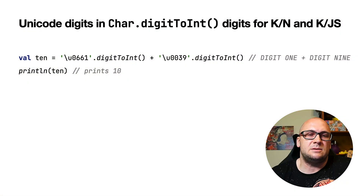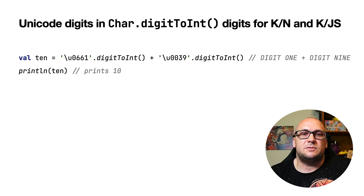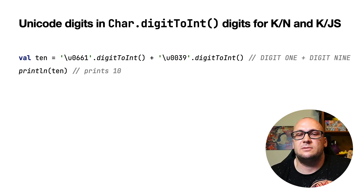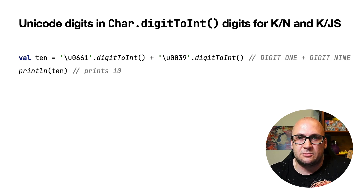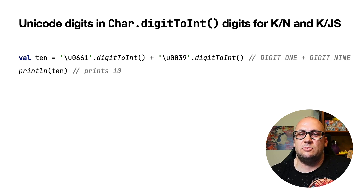The standard library function digit2int returns the numeric value of the decimal digit that the character represents. Before 1.5.20, the function supported all Unicode digit characters only for the Kotlin/JVM backend; the implementations for Native and JavaScript platforms supported only ASCII digits. From now on, both Kotlin Native and Kotlin/JS can call this function on any Unicode digit character and get its numeric representation.